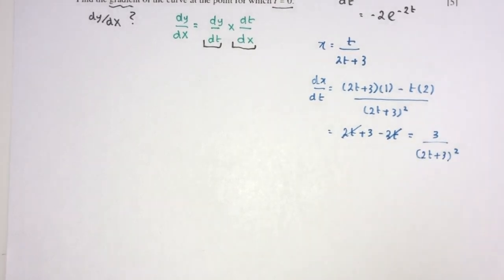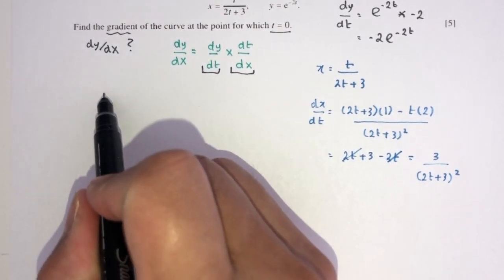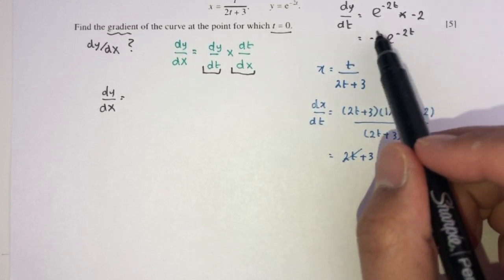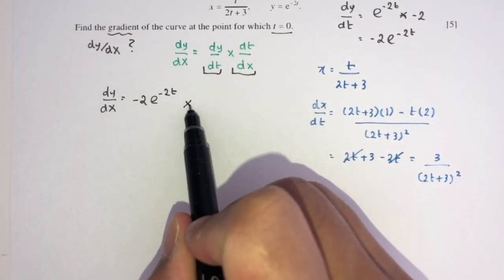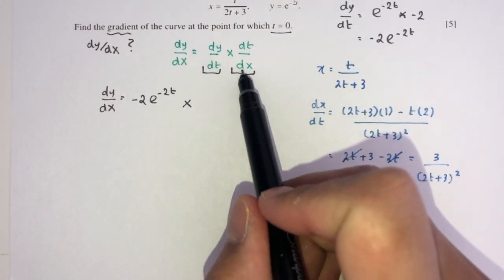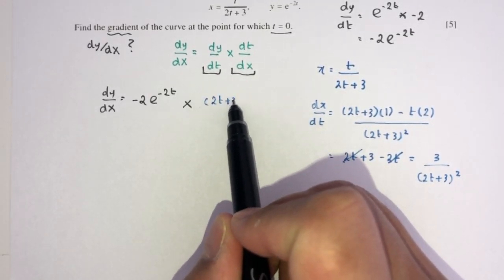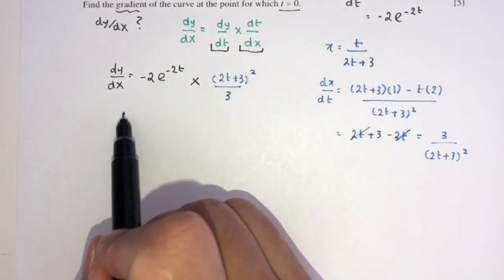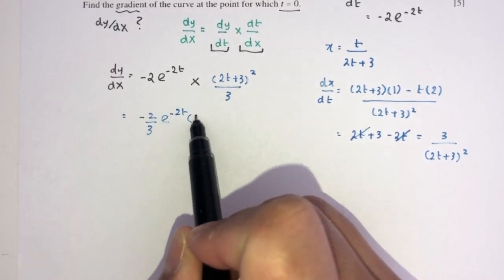Now we put these back into the main equation. dy/dx = dy/dt × dt/dx. Since we have dx/dt = 3/(2t+3)², we flip it for dt/dx. So dy/dx = −2e^(−2t) × (2t + 3)²/3.